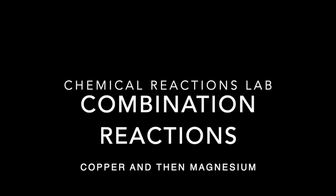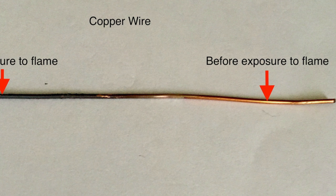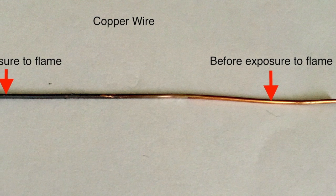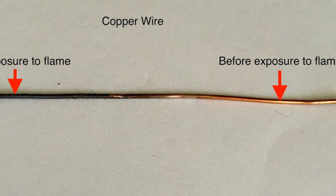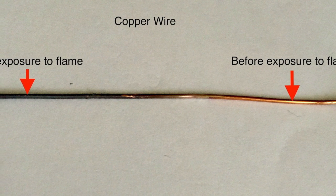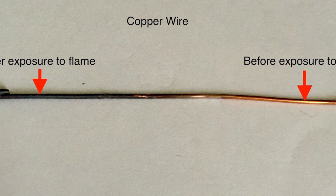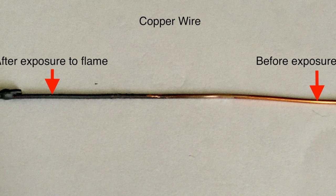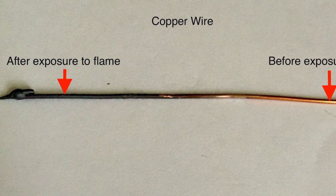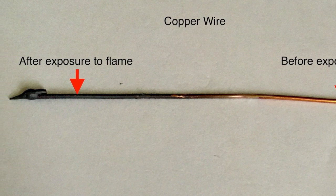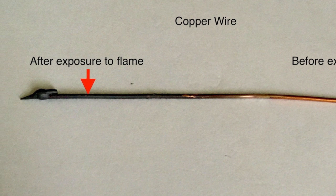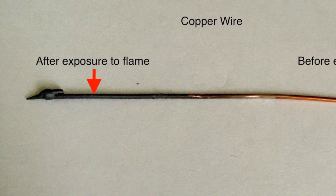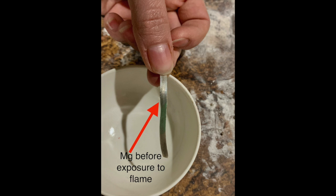We're going to see the results from the copper reaction first, then magnesium. Here you're looking at the picture from the copper wire experiment. I didn't record it, it's not very exciting. On the right-hand side, you can see what the copper wire looked like before I put it in the flame. And on the left-hand side, you can see what the copper wire looked like after I put it in the flame. In fact, I got it a little too hot and it melted.